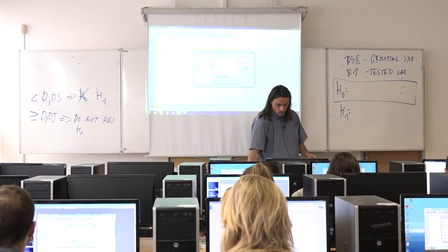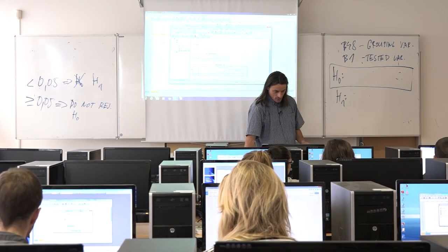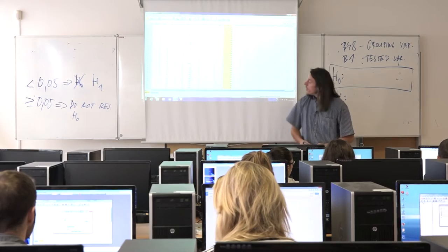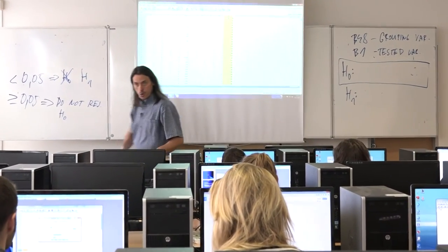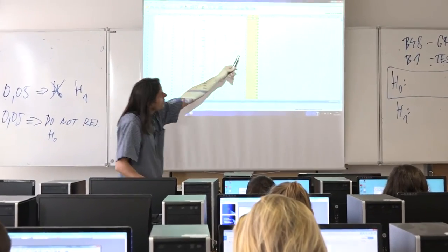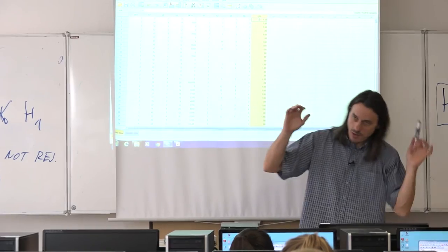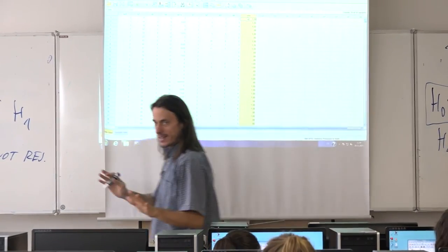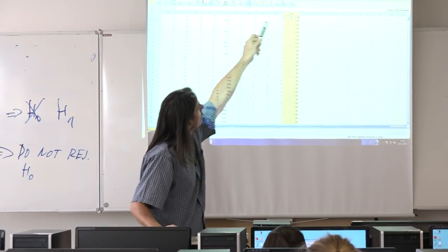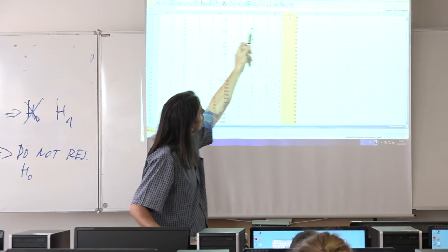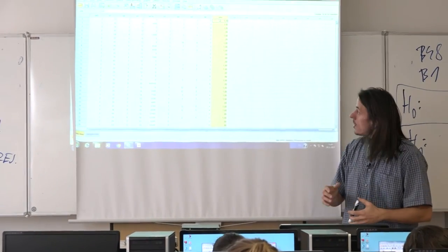In the data view, there is now a new column called 'vote' with only 0s and 1s — the recoding appears correct. Now let's state the hypotheses. For proportions, we use capital P. The null hypothesis: the proportion of men participating in the election equals the proportion of women — P-male equals P-female. The alternative: P-female is not equal to P-male.